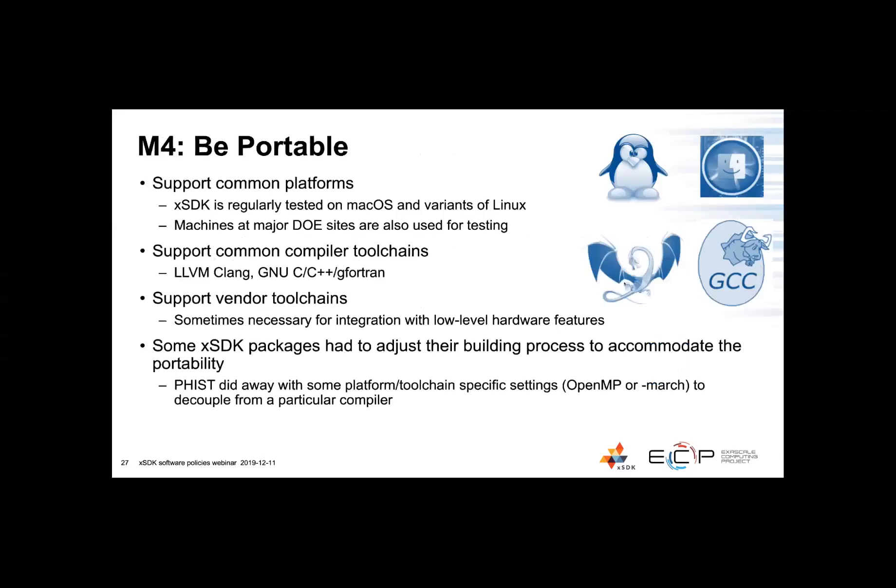In mandatory policy number four, we'd like for the packages to be portable across most common platforms. We test XSDK across Mac OS and variants of Linux, and the packages should also look into that, as well as the major DOE sites where we test and make sure that XSDK works properly. The compilers we ask to test are LLVM and GNU for the open source compilers, but also vendor compilers are important, especially on some machines that require those vendor compilers to unlock low-level hardware features.